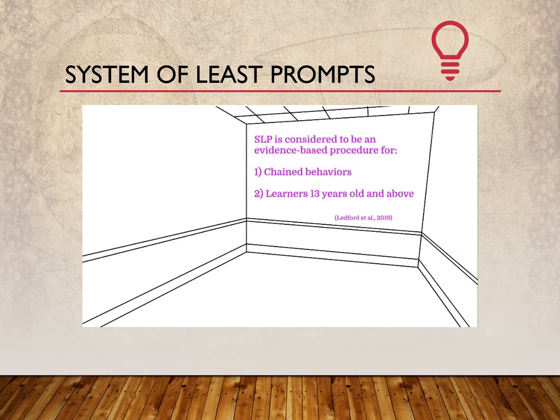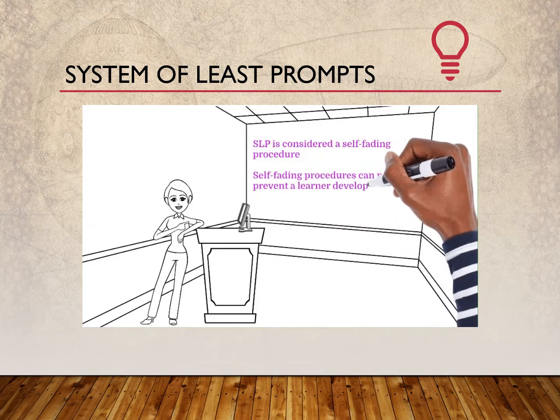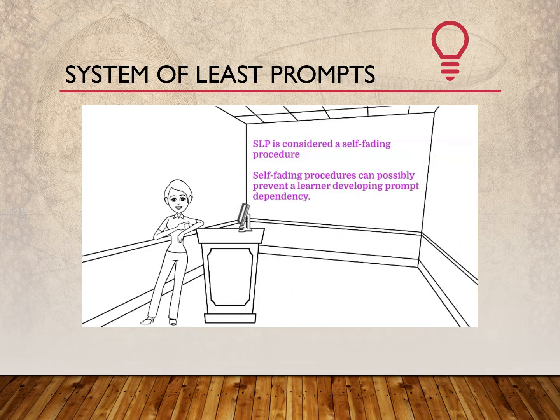This concludes the summation of the introductory video, so if you would like to know more information about the demographics of students that this method is evidence-based for, please go back and review the introductory video if you haven't had time to do so. System of Least Prompts is considered a self-fading procedure, meaning that how intrusive you are when you're implementing the prompt lessens as the learner learns to perform the behavior independently.